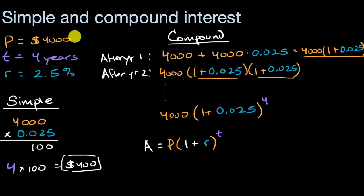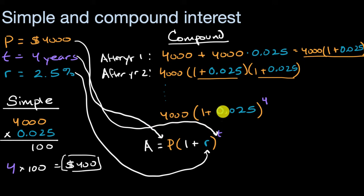And so that's exactly what we had here. I didn't want to just directly plug into the formula, which we easily could have done. We could have put the 4,000 here, the rate here, and the time here to immediately get to this. But I want you to see where this is coming from.